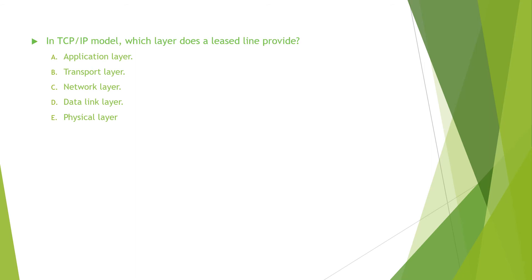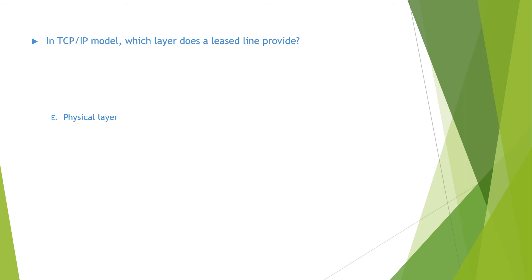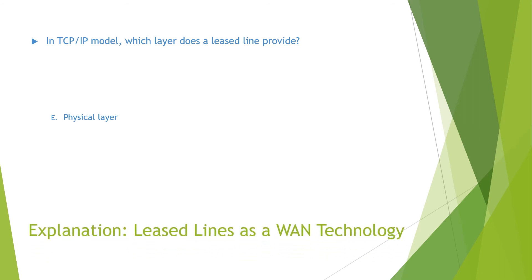The question reads: in the TCP/IP model, which layer does a leased line provide? Options: application layer, transport layer, network layer, data link layer, physical layer. As you know, a leased line is a physical WAN link, so it provides the physical layer. You can find the detailed explanation in the video Leased Lines as a WAN Technology.